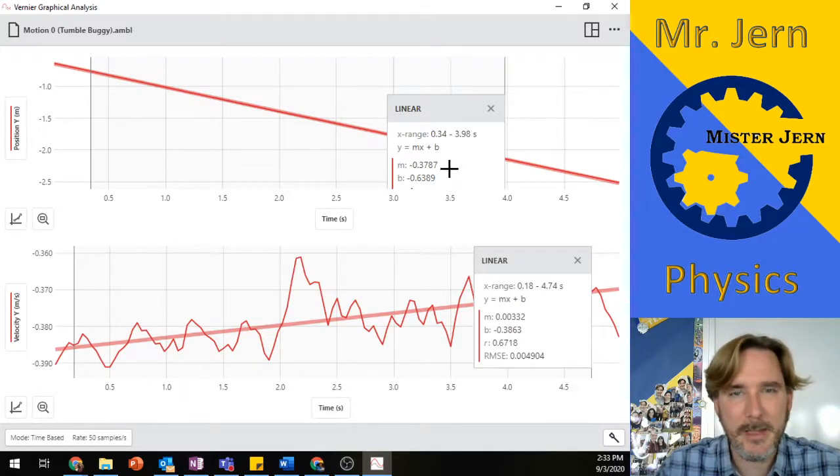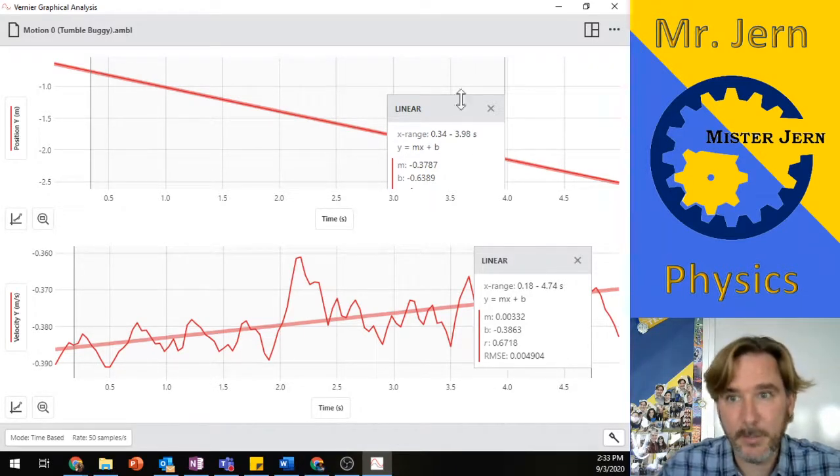The negative means it's going in the opposite, backwards direction, in the negative direction. And 0.38 meters per second means it's going about 38 centimeters a second, which is pretty close to what you got for the speed of your tumble buggy.